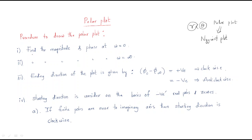The first procedure to draw the polar plot: first, find the magnitude and phase at omega equals zero. For the given open-loop transfer function, find the magnitude and phase at frequency equal to zero — this is the first point. Second, find the magnitude and phase at omega equal to infinity — that is the last frequency. Third, find the ending direction of the plot.